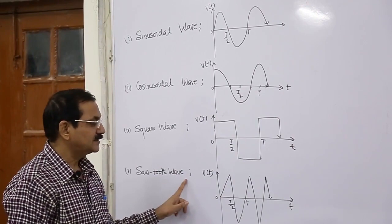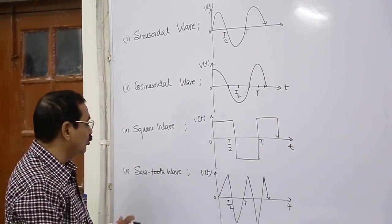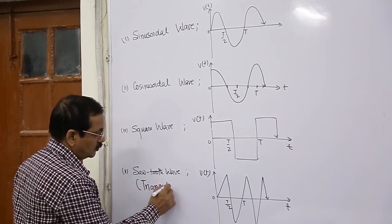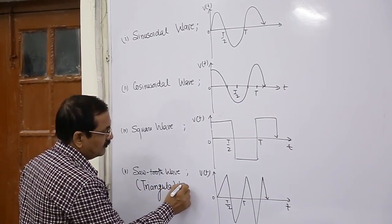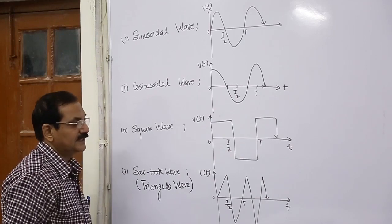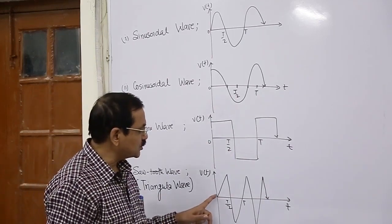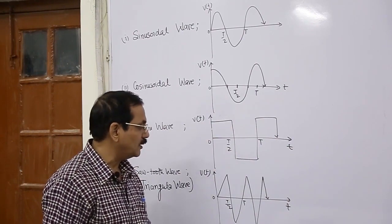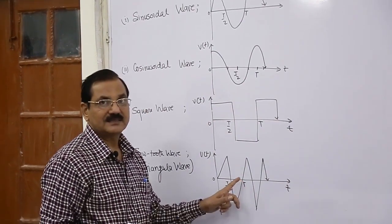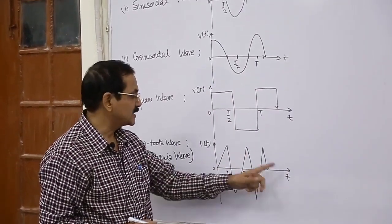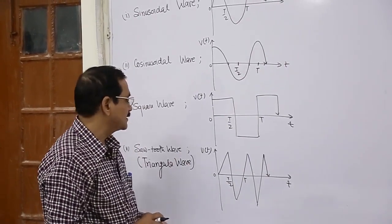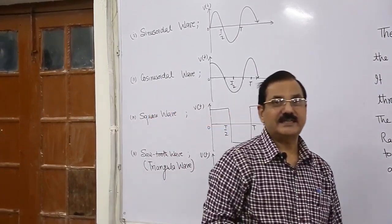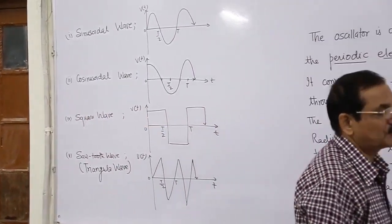The sawtooth wave — sometimes also called a triangular wave — shows a rise of amplitude with respect to time and then a sharp fall, followed by a rise again. This kind of wave is a sawtooth wave. A pulsating voltage is also produced.